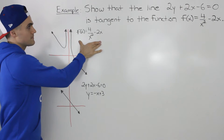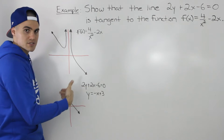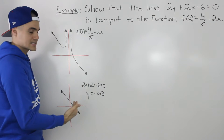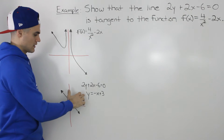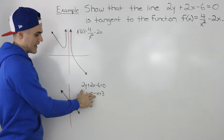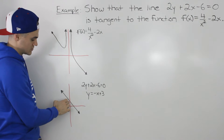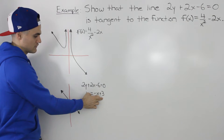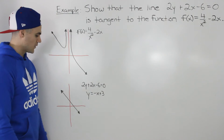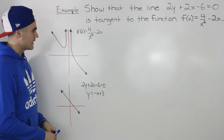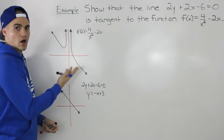So that's how this function looks. And then if we take the line 2y plus 2x minus 6 equals 0 and isolate for y to put it into y equals mx plus b form, we get y equals negative x plus 3. That's this line here, with a y-intercept of 3 and a slope of negative 1, so the line is pointing down. We have to show that this exact line is the tangent on this function somewhere on the function.